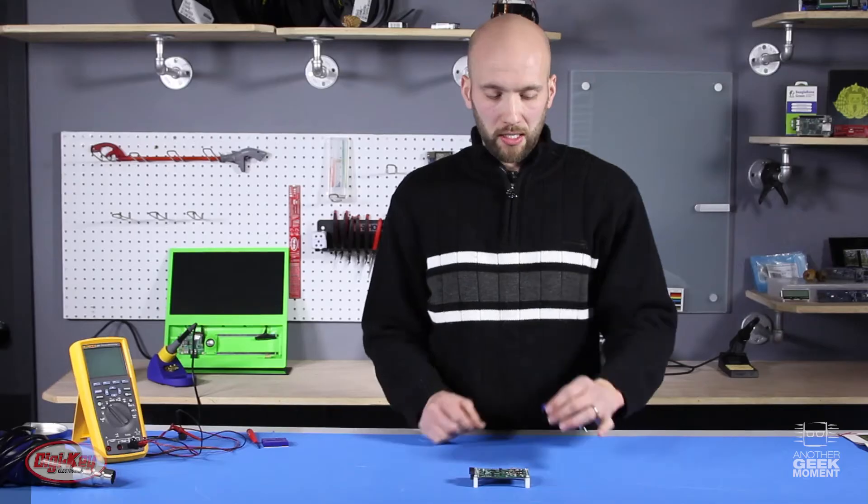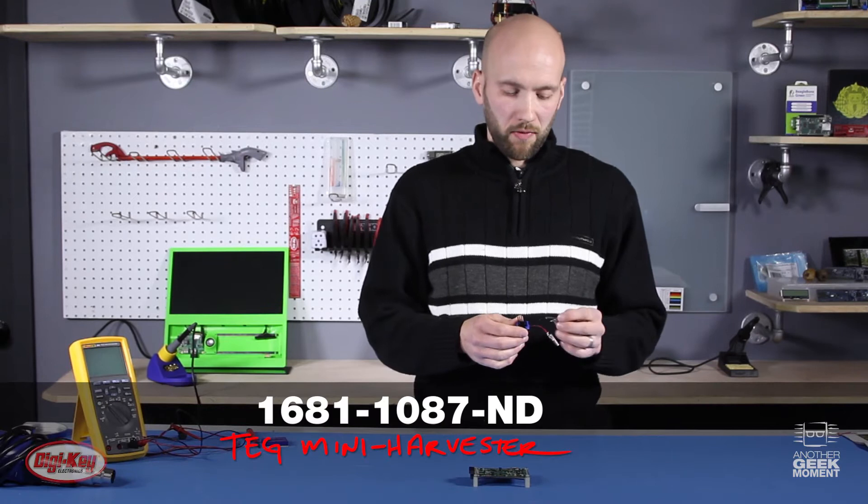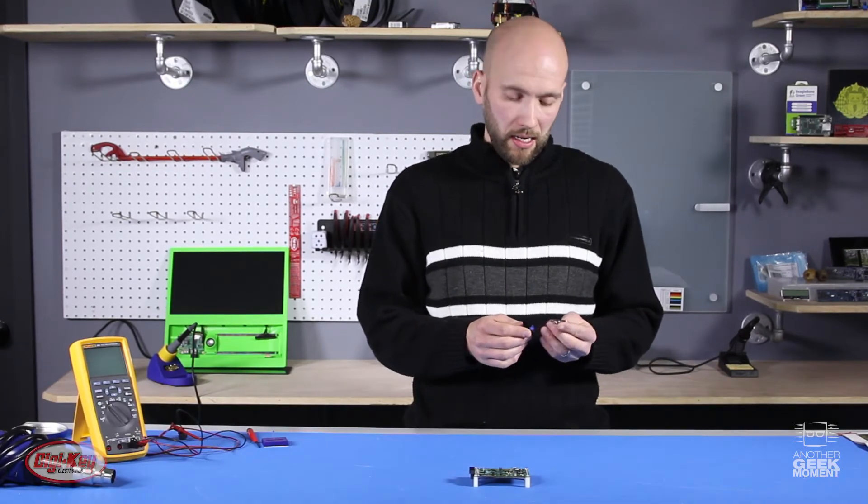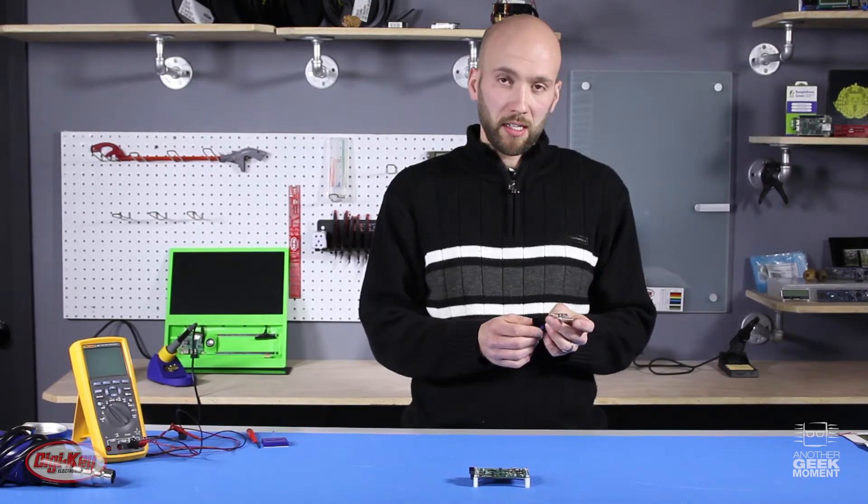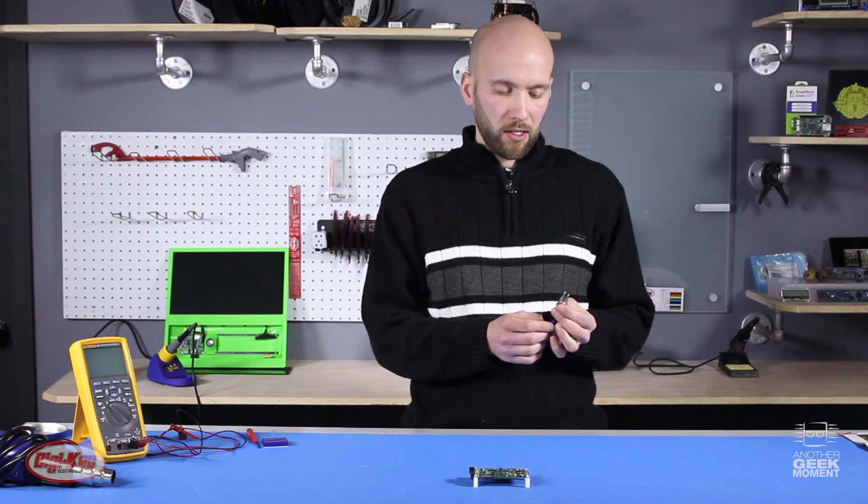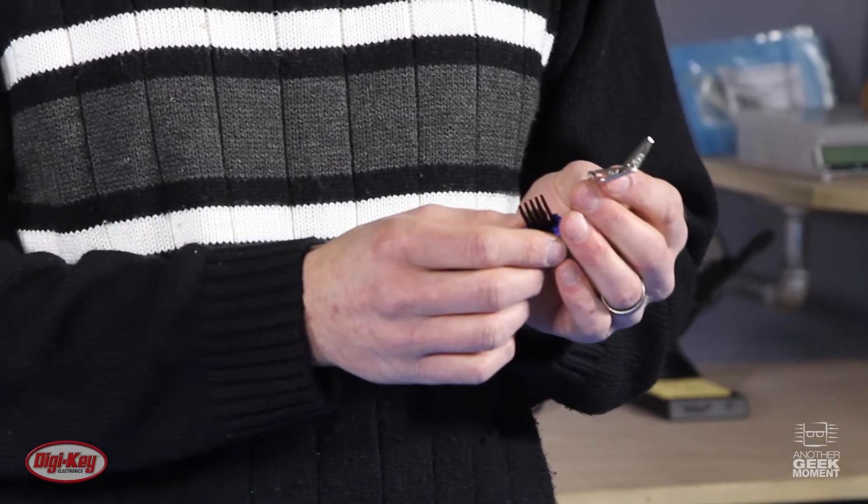Our energy source today is going to be heat which will bring us to the Marlow TEG. This is a great place to start if you're looking at energy harvesting. It comes with two wire leads which are easy for hookup. I've made it a little easier still by soldering on these alligator clips.